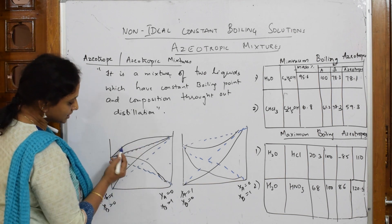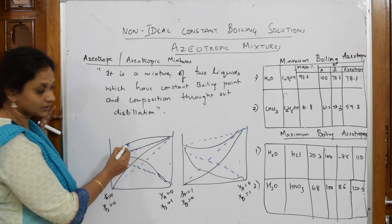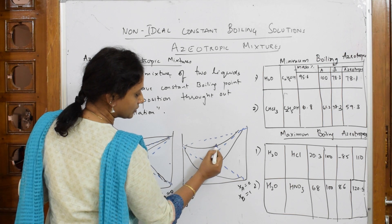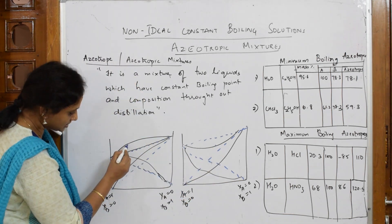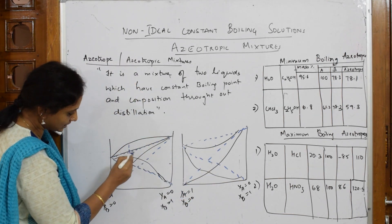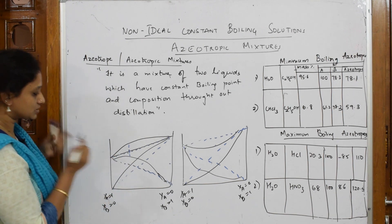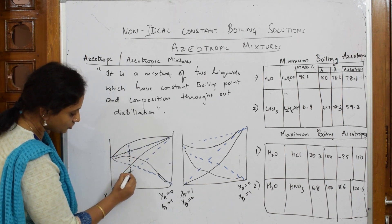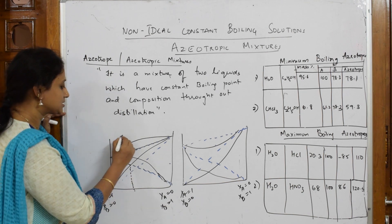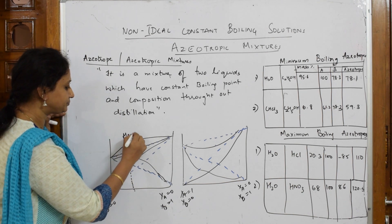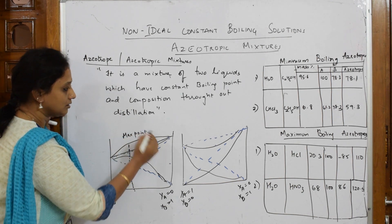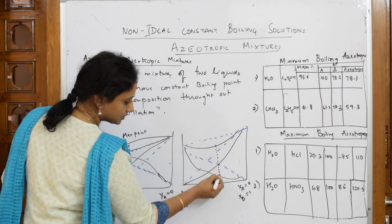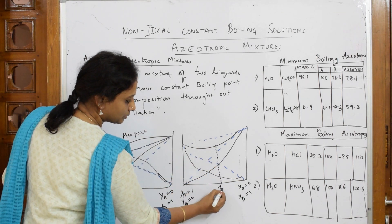Now observe carefully. In the positive deviation graph there is a maximum point, and in the negative deviation graph there is a minimum point. Let me drop a line down to mark these clearly. This is the maximum point, and this is the minimum point.